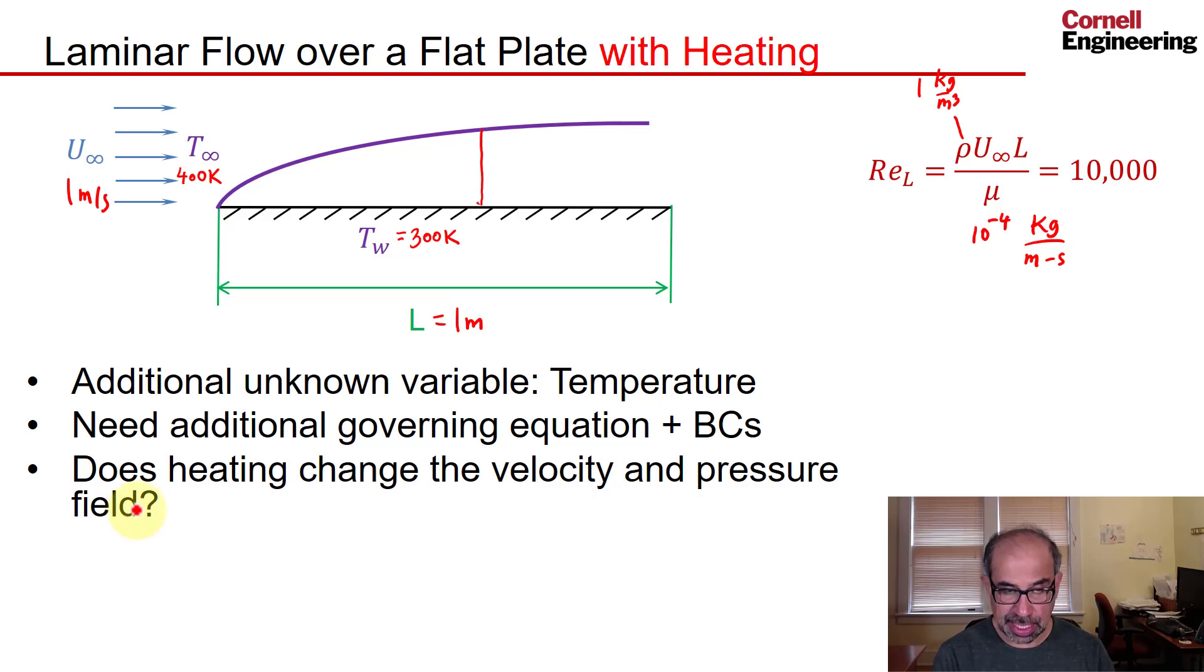We can see that when we look at the governing equations in a moment. The thermal boundary layer thickness is governed by the Prandtl number, similar to the velocity boundary layer thickness being governed by the Reynolds number. We'll take the Prandtl number to be 1.